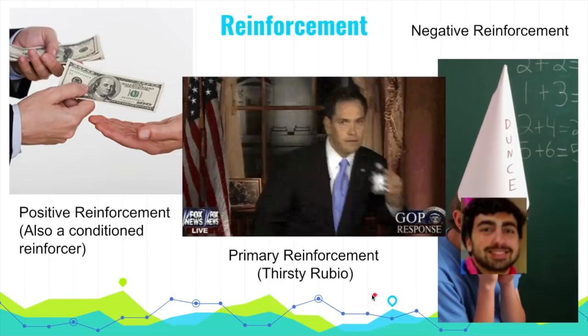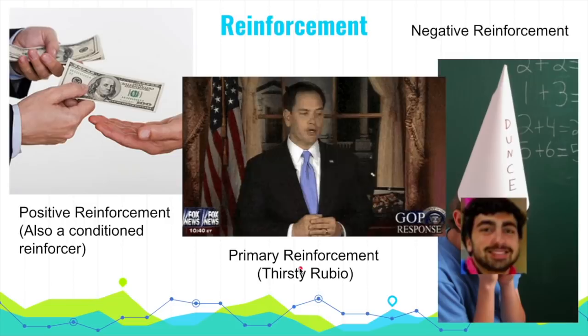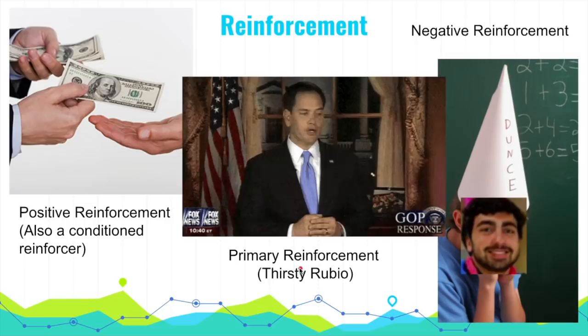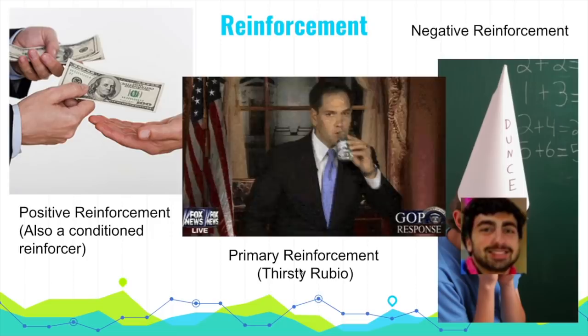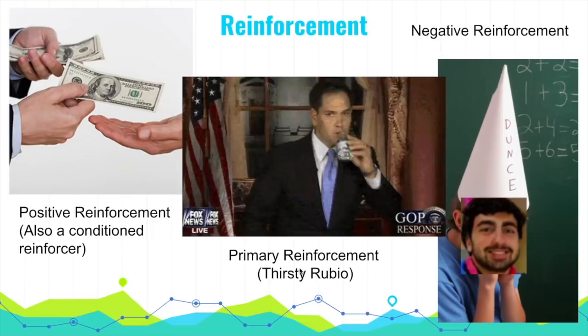Reinforcement is delivered through primary or conditioned reinforcers. Primary reinforcers satisfy innate biological needs, such as drinking when thirsty. Conditioned reinforcers, also known as secondary reinforcers, are gained through association with primary reinforcers — money is an example, as it can buy food to satiate hunger or water to satiate thirst.